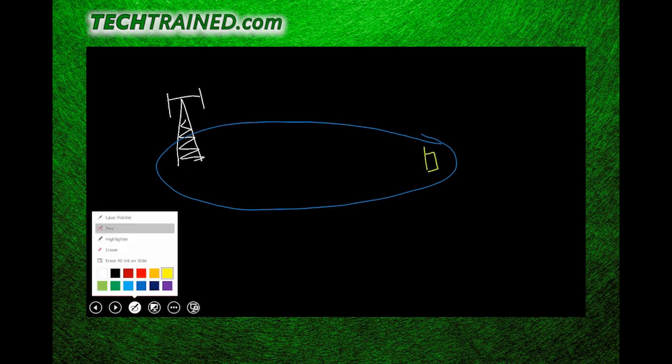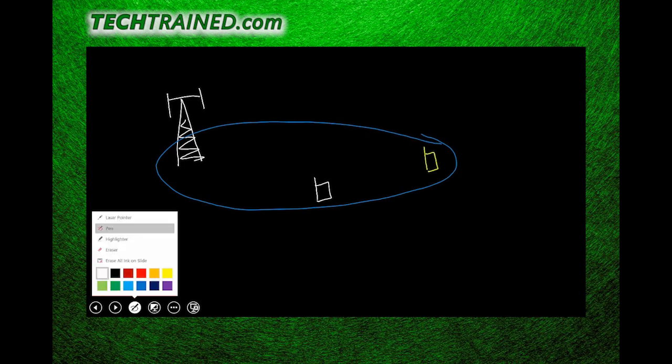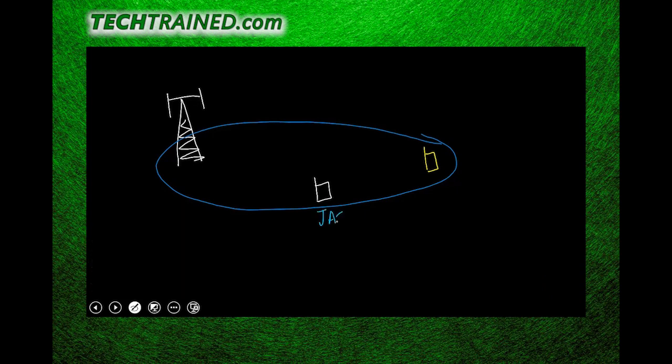Consider a scenario with two users: one user is Jack, standing in good coverage near the site, and the other user is Ryan, standing farther away in poor RF coverage. Both Jack and Ryan have the same data plan, pay the same monthly subscription, and are running the same services at that specific instant.